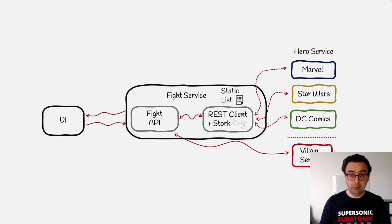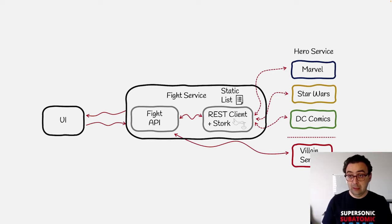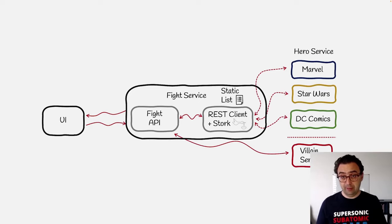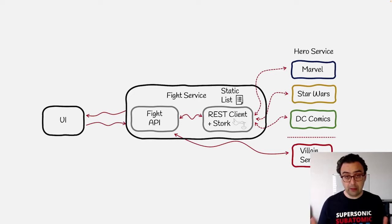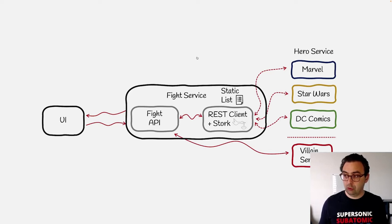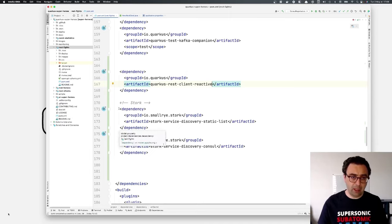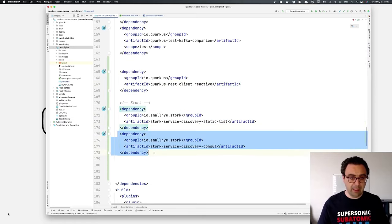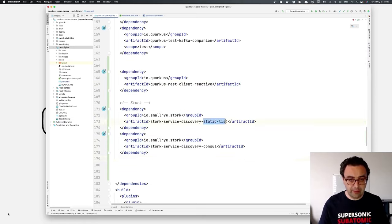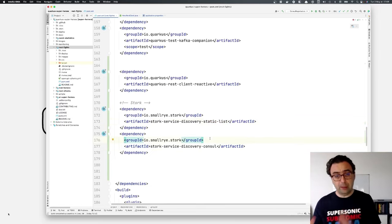In the first part of the demo I'm going to use a static list with all the addresses of my three hero service instances. It's convenient for static architectures or for development time. Let's have a look how it works — I'll switch to my IDE. The first thing you need to do is add the dependencies for the Stork service discovery you need. In my case I need two: the static list, which will be used first, and also Consul for the second part of this demo.